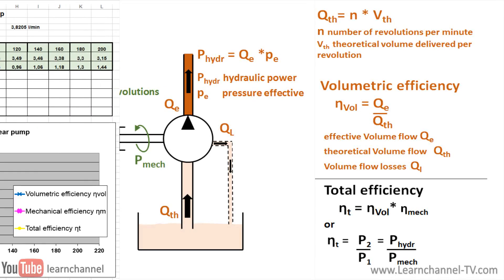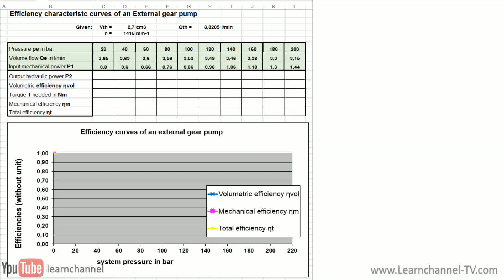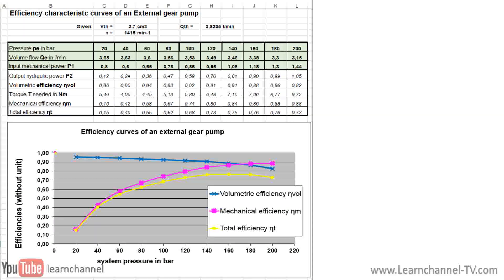The following measuring table shows the volume flow and the mechanical input power in dependence to the system pressure. The other values you can evaluate. What you see is that the volumetric efficiency is getting worse with growing pressure. And of course, the total efficiency curve must always remain under the other curves.